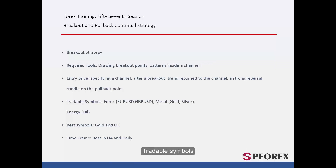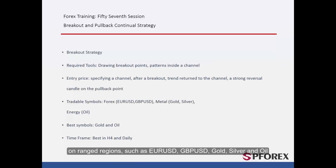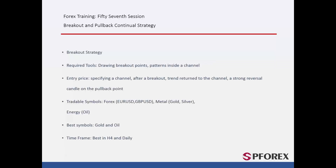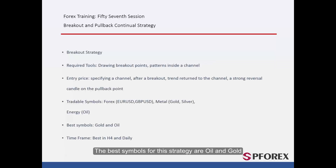Tradeable Symbols: This strategy can be exploited on all symbols, on ranged regions such as EUR against US Dollars, British Pounds against US Dollars, Gold, Silver, and Oil. The best symbols for this strategy are Oil and Gold.